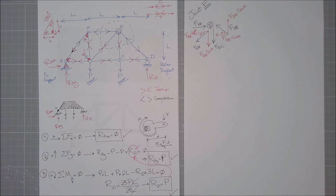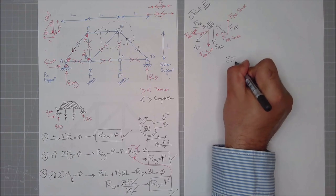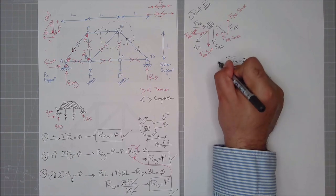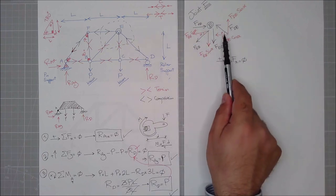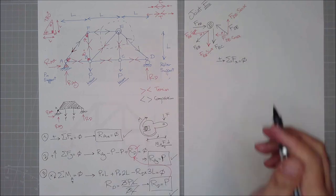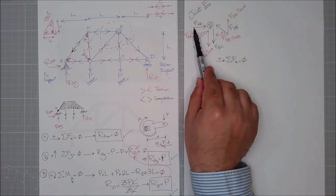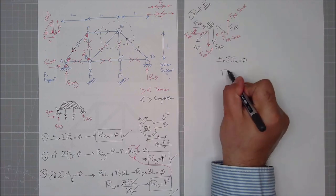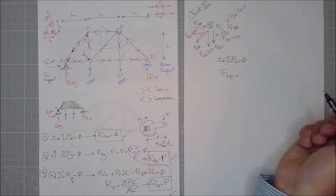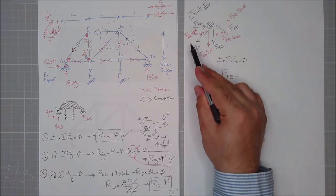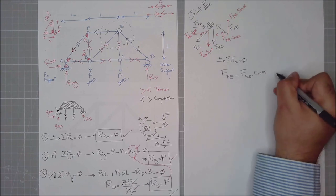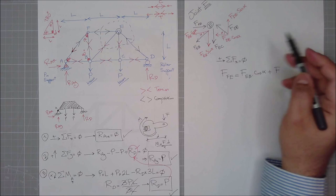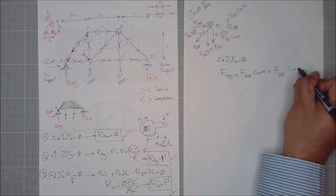Can I write the equations of equilibrium for this? For sure. Summation of all forces in X direction equals to zero, and let's consider this direction positive. I have three forces. So whatever is going this side, FFE, is equal to whatever is coming from the other side, which is FEB times cosine of alpha plus FDE times cosine of alpha.